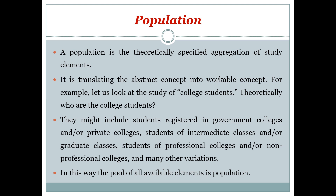Population is the theoretically specified aggregation of study elements. If we are going to study diabetic people, the diabetic population in Pakistan or in a city is going to be our population. For example, in a study of college students, they might include students registered in government or private colleges, students of intermediate or graduate classes, students of professional and non-professional colleges. The pool of all available elements is the population.